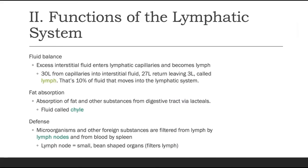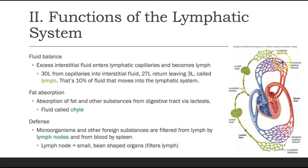Let's talk more deeply about the functions of the lymphatic system. Regarding fluid absorption, we start our journey at our blood capillaries. Starting at the arteriole, it goes into the capillary where we have exchange with the tissues — we give off nutrients and oxygen and pick up waste products into the venule to be carried back. As we exchange with the tissues surrounding the capillary network, 90% of the fluid moves back onto the venous end of the capillary.